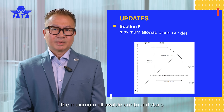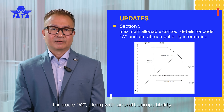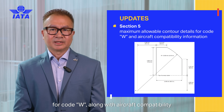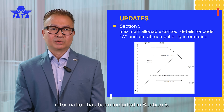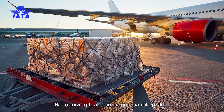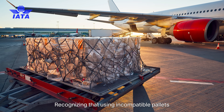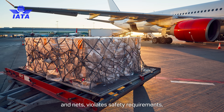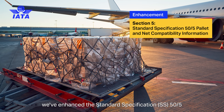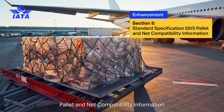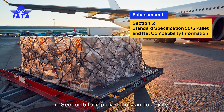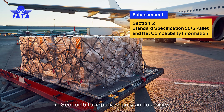The maximum allowable contour details for Code W, along with aircraft compatibility information, has been included in Section 5, recognizing that using incompatible pallets and nets violates safety requirements. We've enhanced the standard specification 50-5 pallet and net compatibility information in Section 5 to improve clarity and usability.